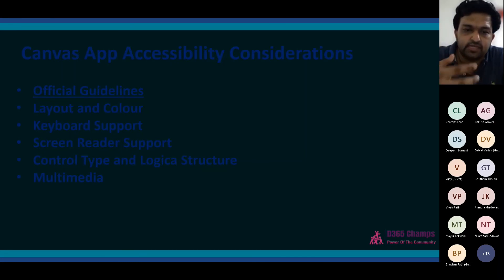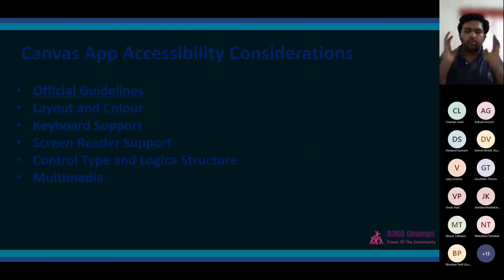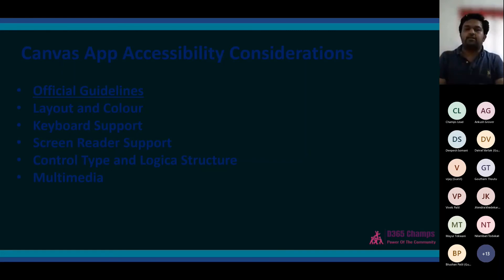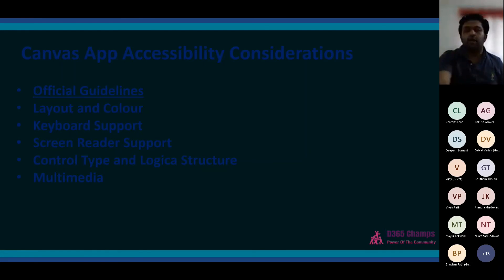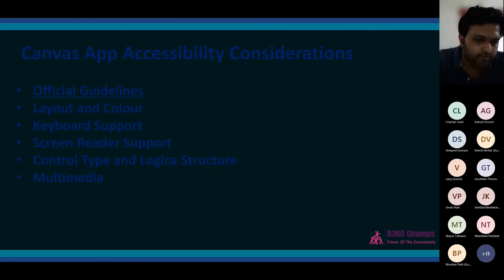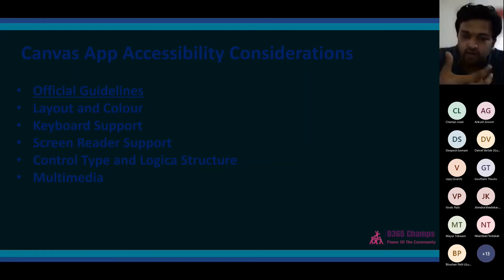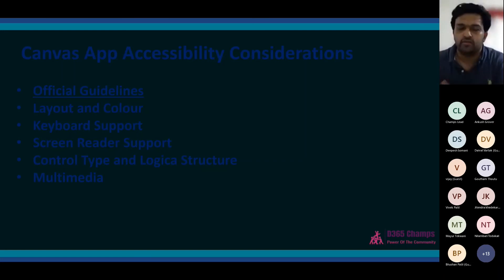For this application, I haven't given an accessible label to any field. So when the narrator reaches here, it will simply say 'text input' — the user may not understand what to enter. But if I go to my accessible form, I have given proper accessible labels — for example, 'Enter your full name here' — so that the screen reader will read it out and the user can understand what that field is for. Let me show that in action. I'm just turning on the narrator — please let me know if you can hear the screen reader audio.